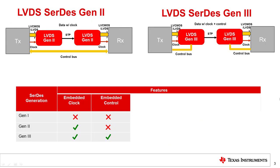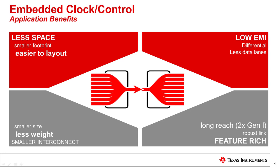These devices offer various features, but the most apparent feature of our Gen 2 and Gen 3 SERDES is the embedding of the clock and the data. Having a single differential pair instead of four or more greatly reduces the footprint of the PCB, makes it easier to layout, allows the use of smaller connectors, reduces EMI due to fewer data lanes being transmitted, and extends the reach of the cable by at least twice that of Gen 1 devices.